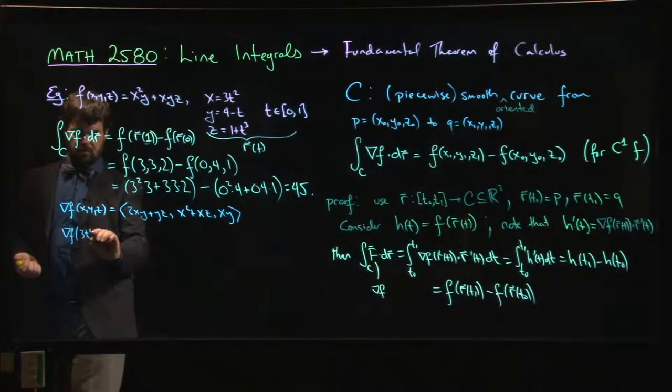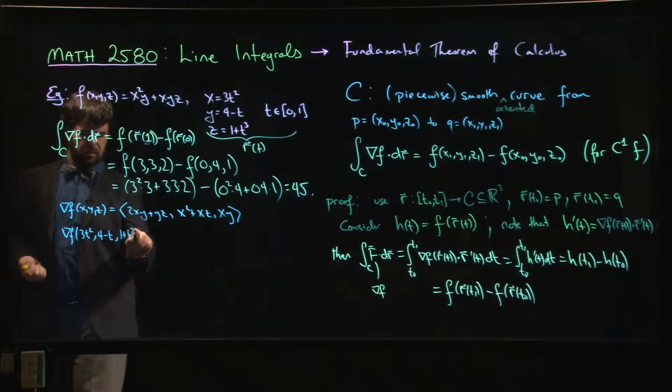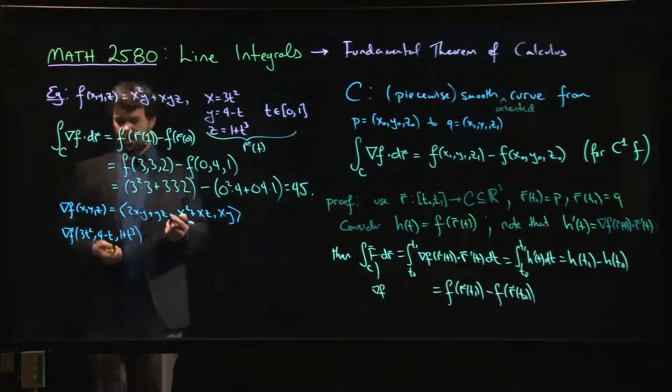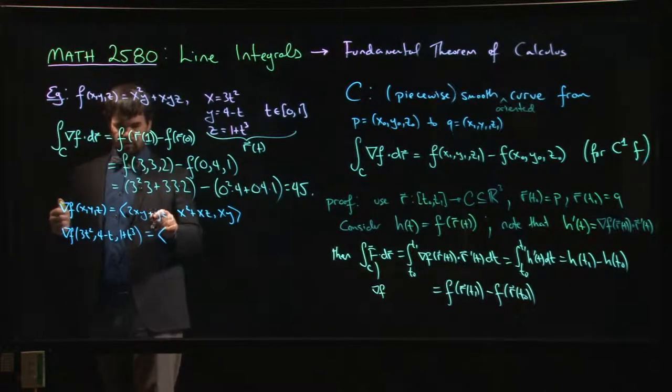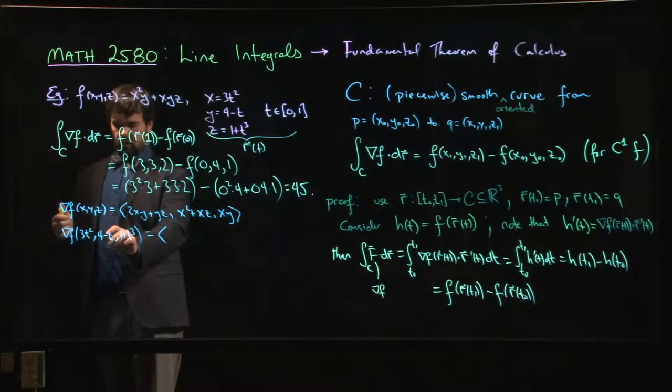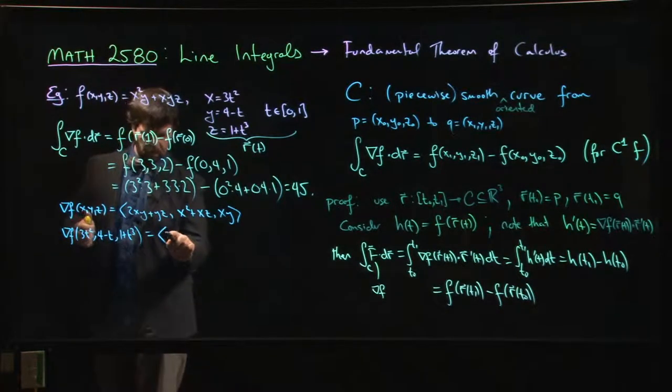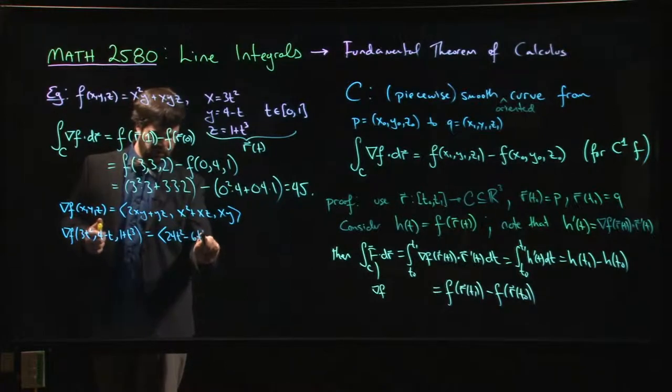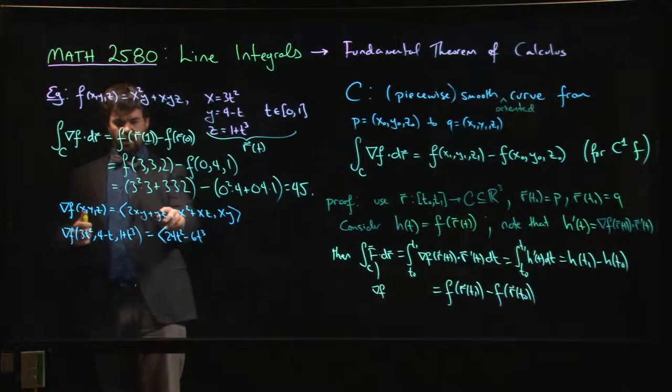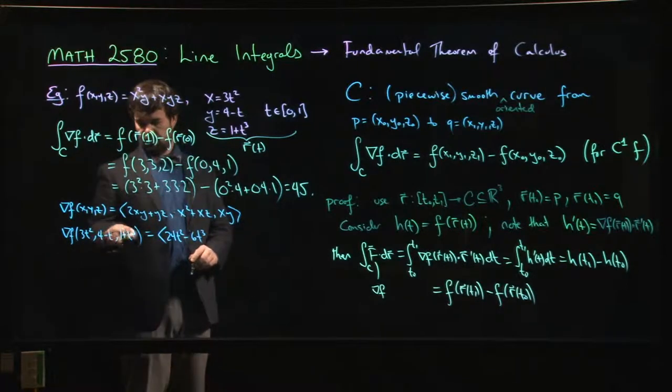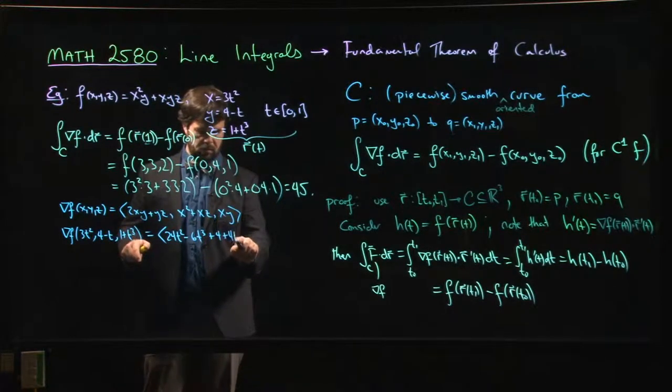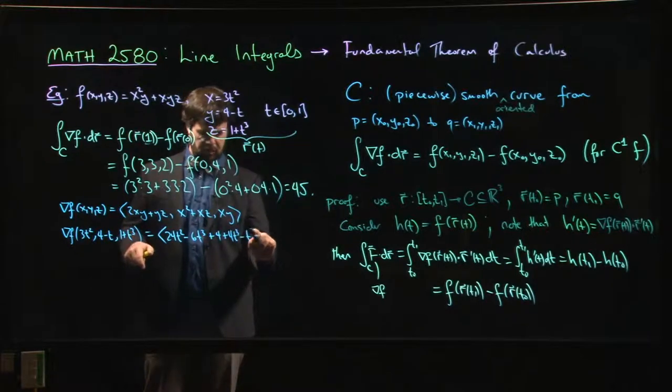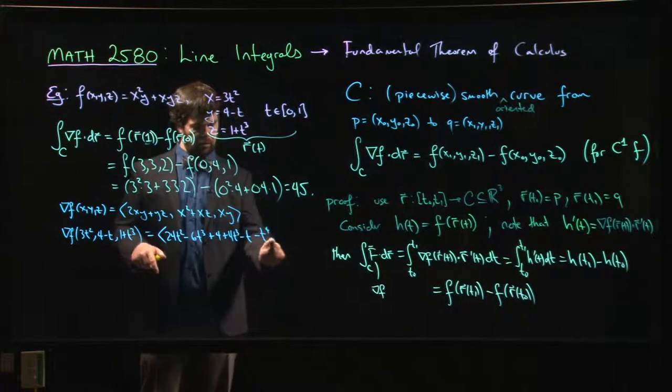x equals 3t squared, y equals 4 minus t, z is equal to 1 plus t cubed. I can plug those values in, this is going to get really gross really fast, but in principle we could do it. So let's see, so x times y is going to be 12t squared minus 3t cubed, we're doubling, 24t squared minus 6t cubed. Oh, we also have to add on that y times z, so 4 plus 4t cubed minus t minus t to the 4. Oh and that's only the x component, right?